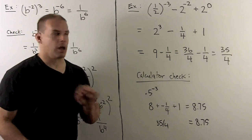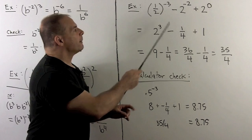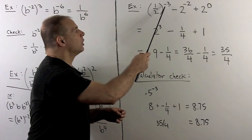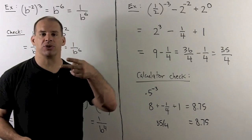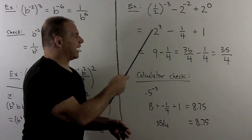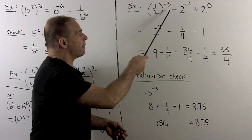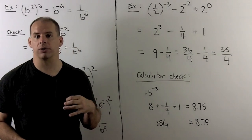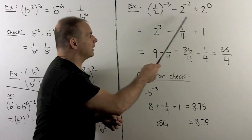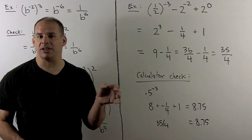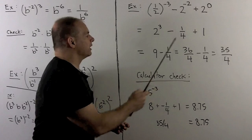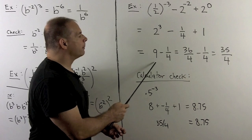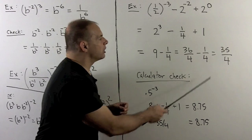For a final example, let's work with numbers: 1 half raised to the minus 3rd, minus 2 to the minus 2, plus 2 to the 0. Going term by term: 1 half to the minus 3rd — to remove the minus in the exponent, we flip the inside to get 2 cubed, which equals 8. Next, the minus with no parentheses means minus 1 times 2 to the minus 2. That's minus 1 times 1 fourth, so minus 1 fourth. Finally, 2 to the 0 gives 1. So we have 8 minus 1 fourth plus 1, which is 9 minus 1 fourth. Getting a common denominator: 9 becomes 36 over 4, giving us 35 over 4.